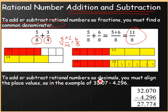To add or subtract rational numbers as decimals we're going to align the place values which means we just align the decimals. Therefore if we want to add 32 and 7 hundredths and subtract 4 and 296 thousandths we would align our decimal. Then we would do our standard algorithm for subtraction. Subtracting our thousandths place value, our hundredths, our tenths, our one and finally our tenths.